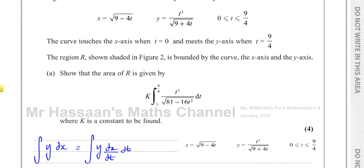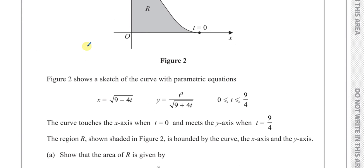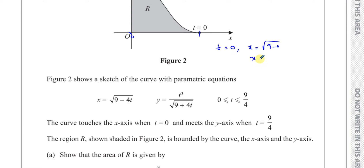Let's think about the limits we need. When t equals 0, that's going to give us a value of x. When t equals 0, x is equal to the square root of 9 minus 0, which is the square root of 9, which is 3. So this is where x equals 3, and this is where x equals 0.